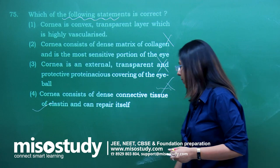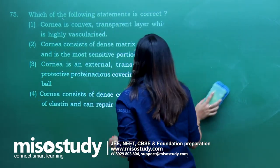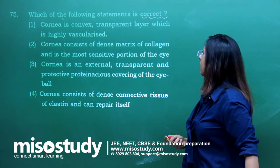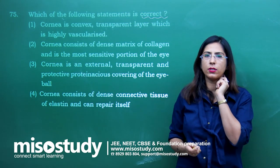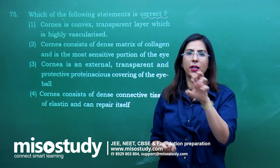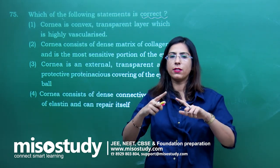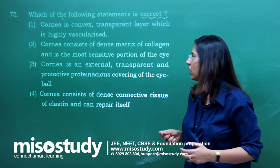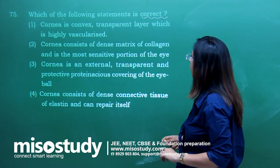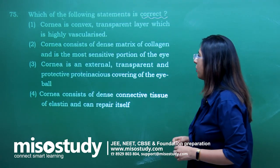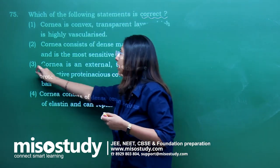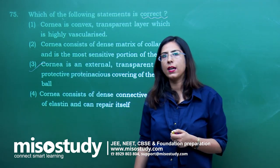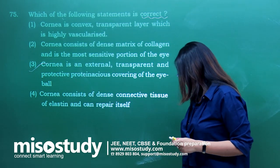Question number 75 — which of the following statements is correct? Cornea is convex transparent layer which is highly vascularized — no, cornea is not at all vascularized, which is the reason cornea transplantation graft rejection does not occur. Cornea consists of dense matrix of collagen and is most sensitive portion of eye — incorrect. Cornea is external transparent protective proteinaceous covering of the eyeball — yes, this is correct. Option 3 is correct for question 75.